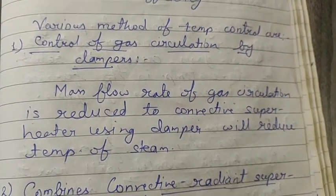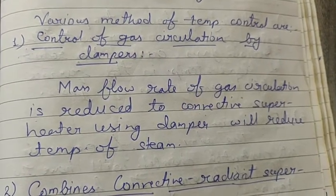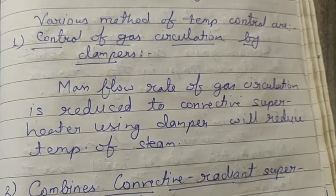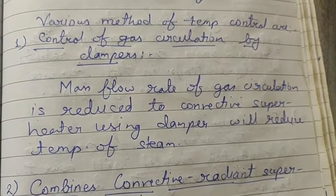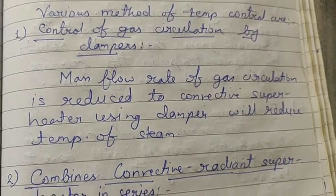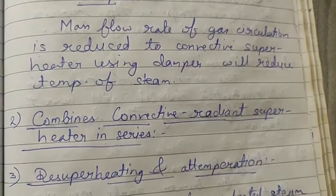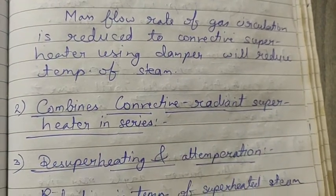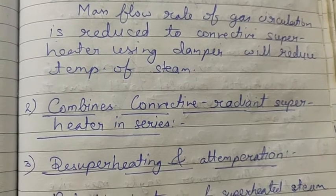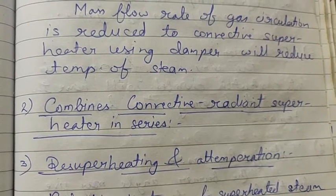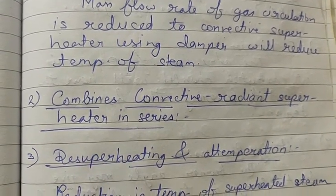To reduce the temperature of the steam, the mass flow rate of flue gases is controlled by a damper. The mass flow rate of gas circulated is reduced to control superheat using a damper in series with the superheater. We can control temperature using superheaters arranged in series.